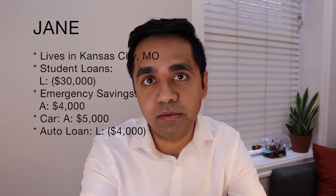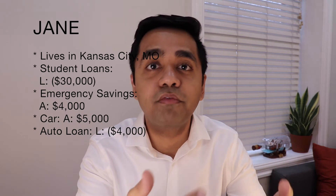Now let's say person B, let's call her Jane, lives in Kansas City, Missouri. She went to college in state and worked as a waitress to save money, so she has student loans of about $30,000. Since she started working seven months ago she has built emergency savings of $4,000. She has a used car with a fair market value of $5,000 and owes $4,000 in auto loans. She uses credit cards for cashback but always pays them off, so she has no credit card debt. Adding her assets — $4,000 savings plus $5,000 car — and subtracting liabilities of $30,000 student debt plus $4,000 auto loan, we get a net worth of negative $25,000.